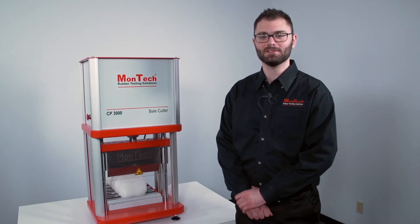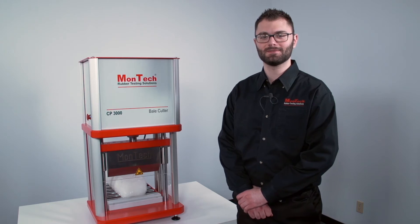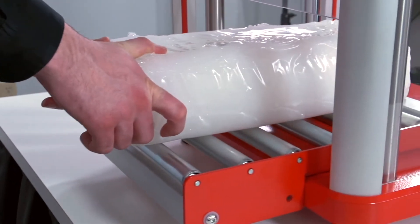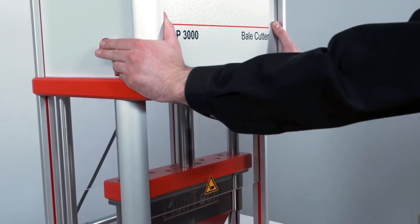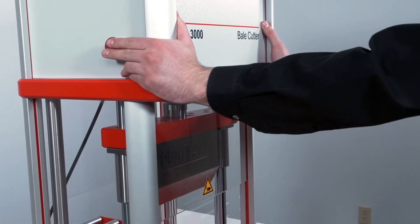The CP3000 Compact is fast, safe, and easy to use. First, load a polymer bale onto the cutting area. In order to cut, operators must hold both start buttons located safely away from the blade on the side of the instrument.